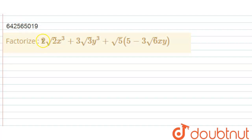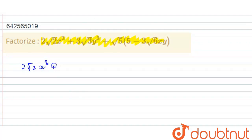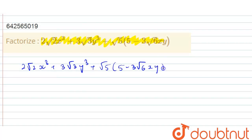In the question it is given: factorize 2√2 x³ + 3√3 y³ + √5 into (5 - 3√6 xy). I will write the question here: 2√2 x³ + 3√3 y³ + √5 into (5 - 3√6 xy).